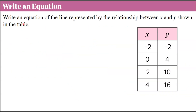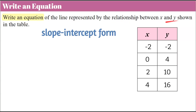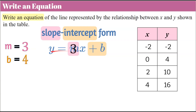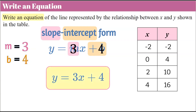Now we're going to write the equation of the line represented by the relationship between X and Y shown in the table. We'll use slope-intercept form: Y equals M multiplied by X plus B, where M is our slope and B is our Y-intercept. We identified a slope of 3 and a Y-intercept of 4. Substituting: M is 3 and B is 4, giving us 3X plus 4. So the equation Y equals 3X plus 4 represents the linear relationship in this table.